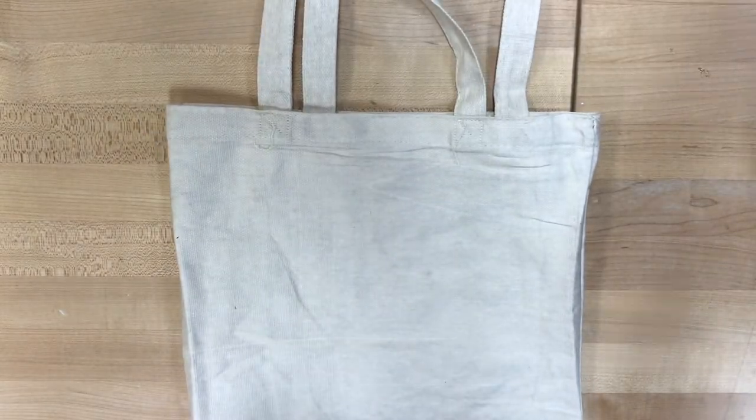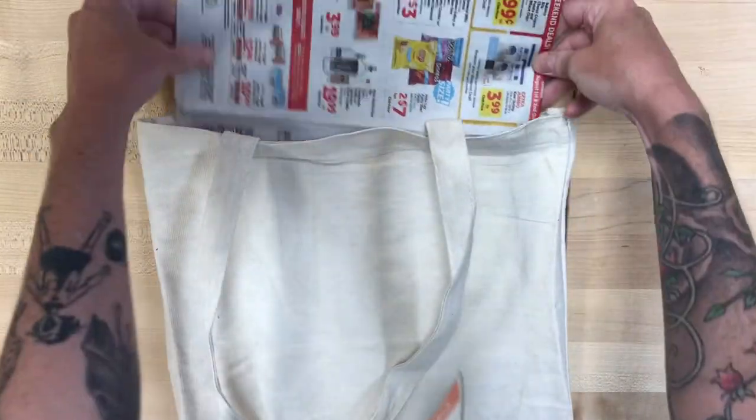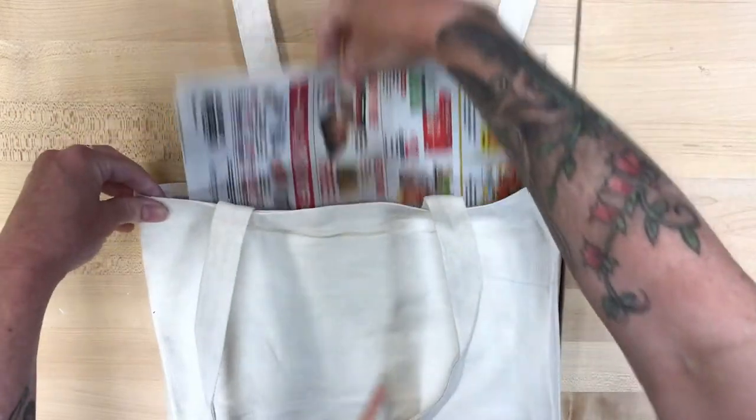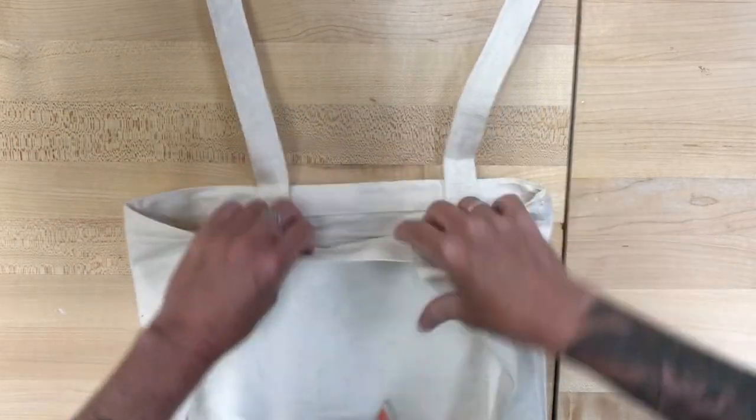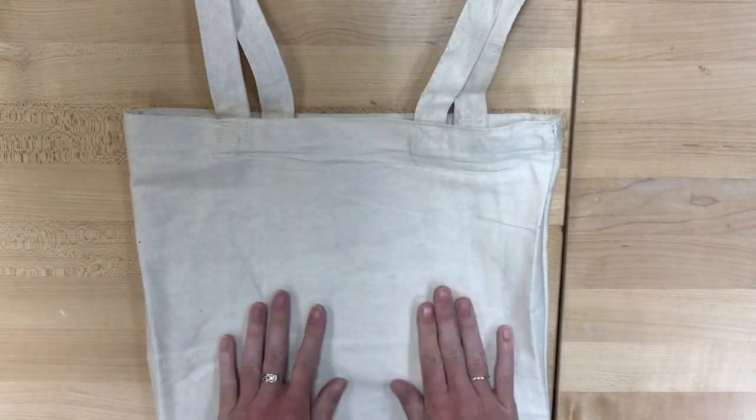But the very first thing, very important thing, is to put some newspaper inside your bag because that is gonna make sure that none of the paint that we are going to stencil on there is gonna leak through to the other side. So definitely don't forget that step.